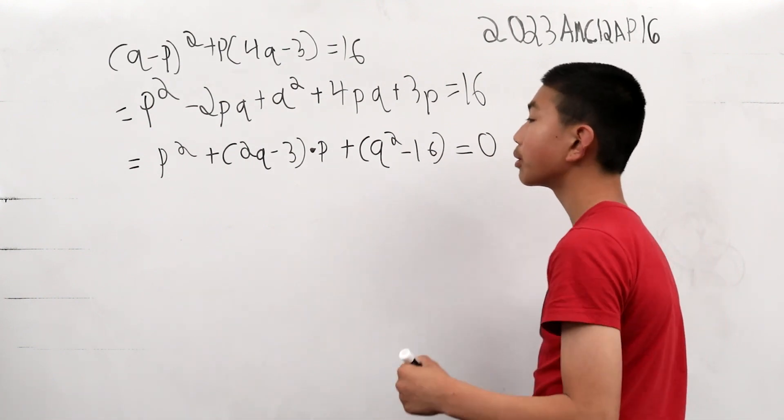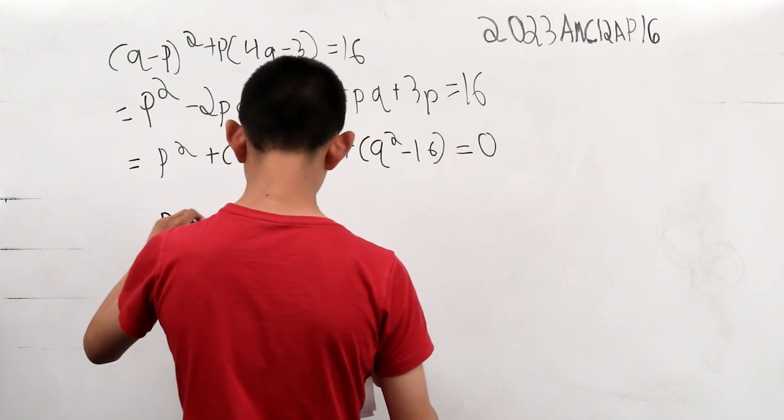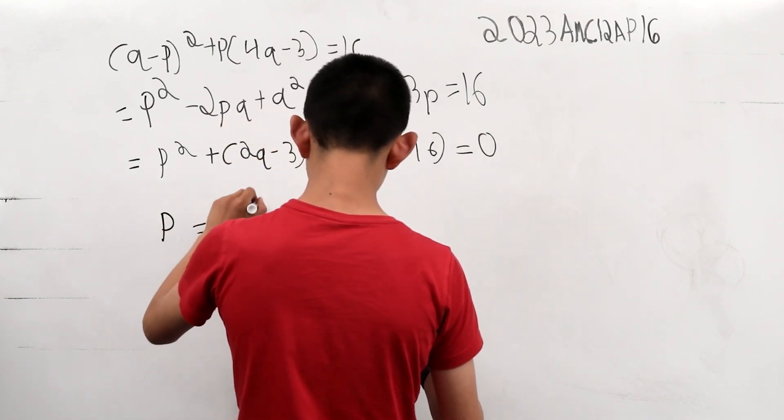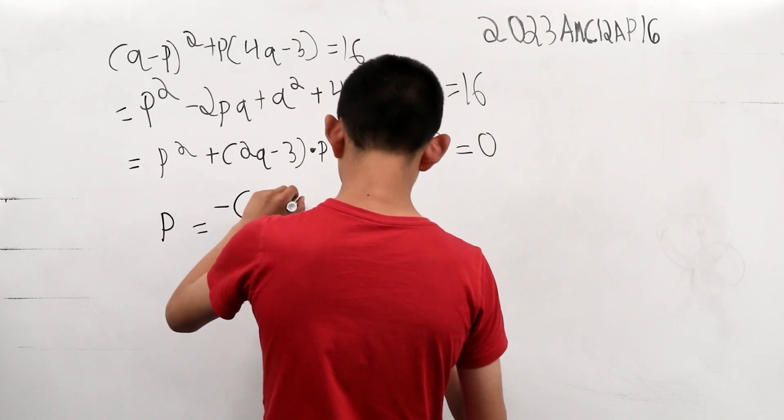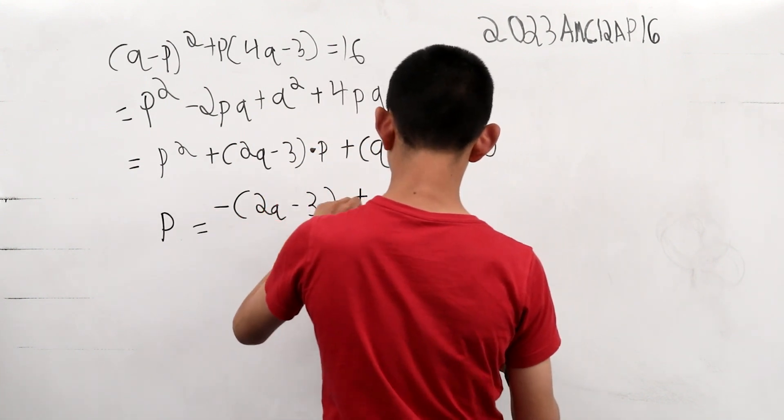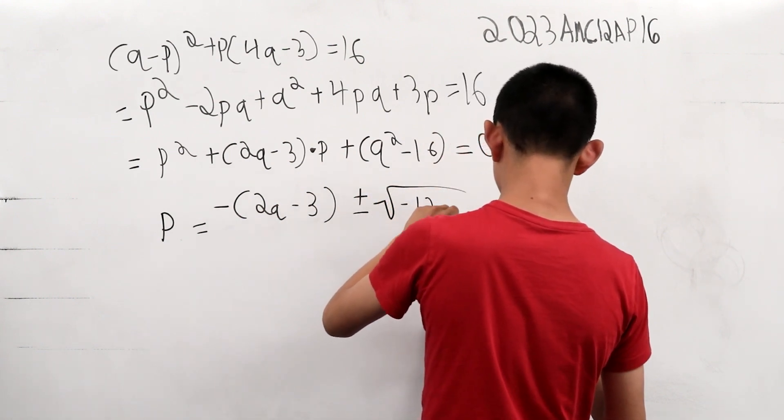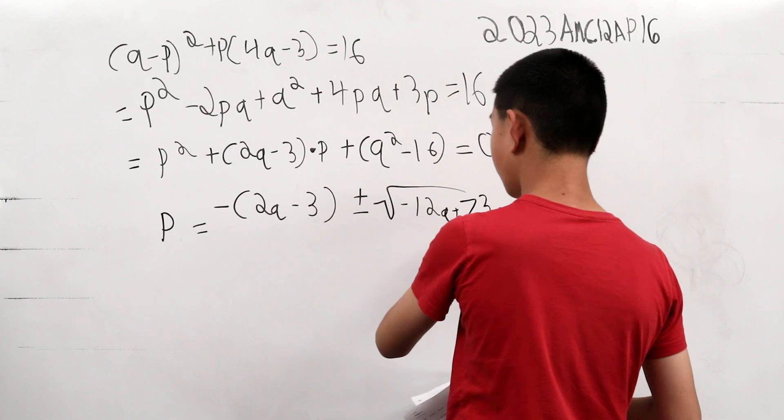So, we get that p equals negative 2q minus 3 plus or minus the square root of negative 12q plus 73 over 2.